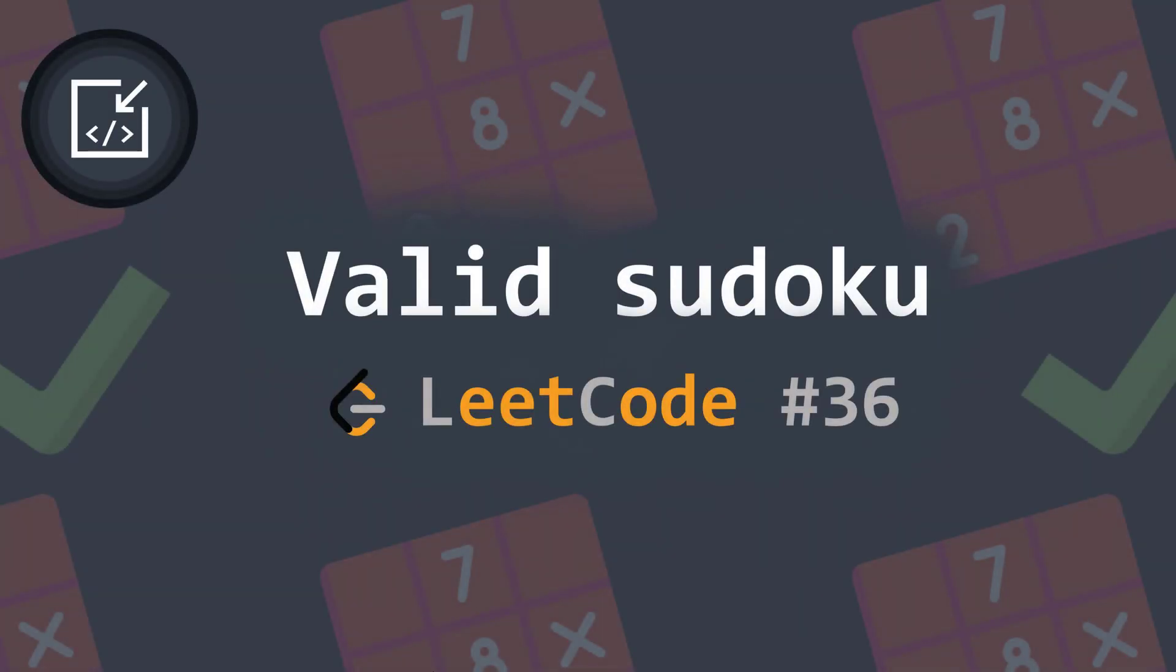In this video, we want to check if a given Sudoku grid is valid. In other words, we want to check if the rule of no duplicates is respected. Note that we will just check if it's valid, we won't solve it. Solving it is another story. And the fact that a grid is valid doesn't even mean that it's solvable.